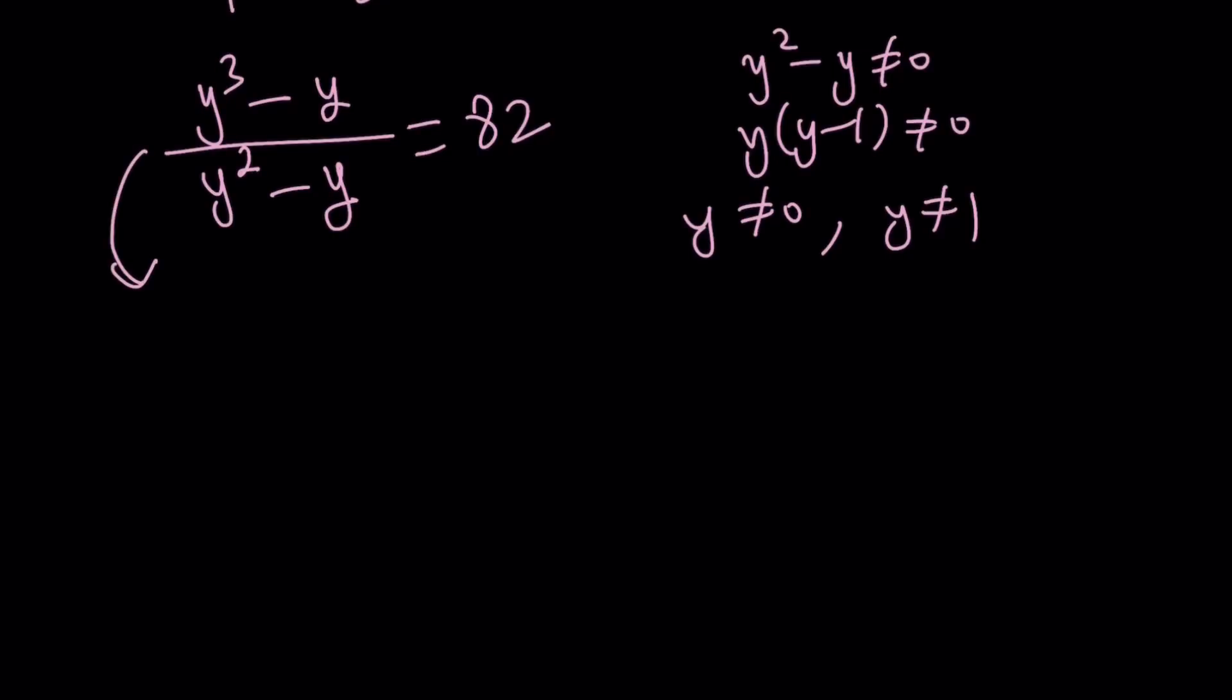Let's go ahead and cross multiply and get a cubic equation from here, which is easy to solve. y cubed minus y equals 82y squared minus 82y, if you cross multiply. Let's put everything on the left-hand side. y cubed minus 82y squared minus 1y plus 82y, that's going to give us positive 81y equals 0.